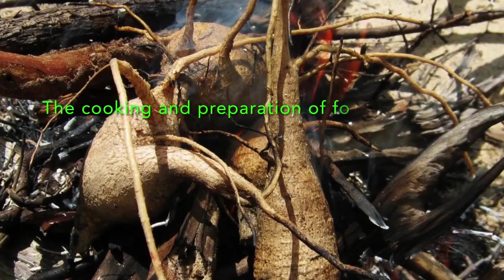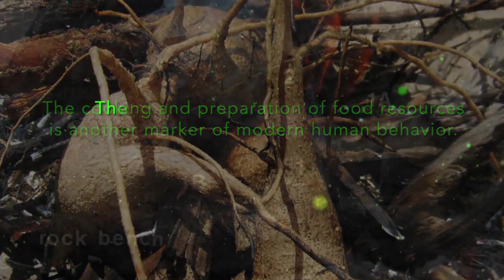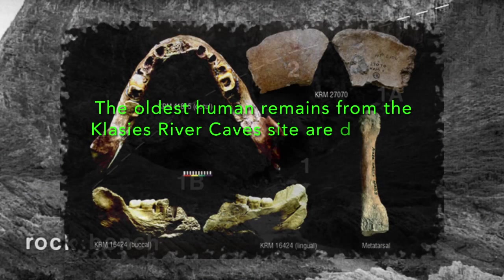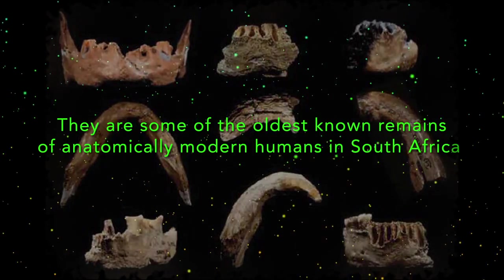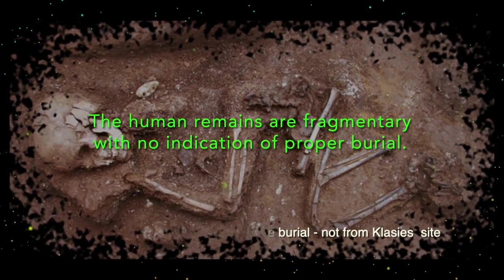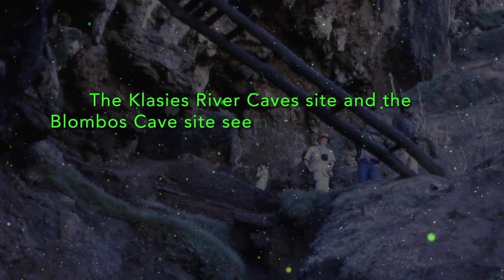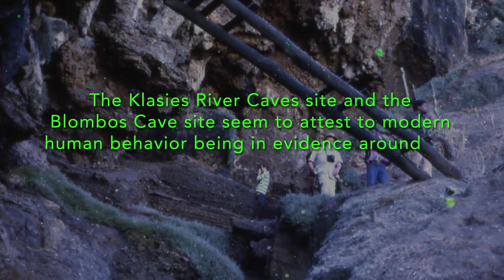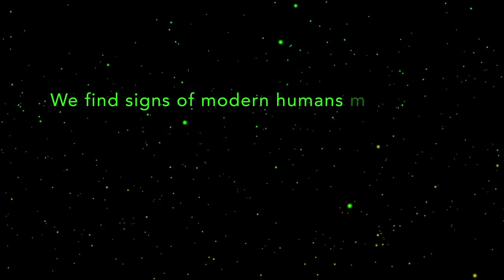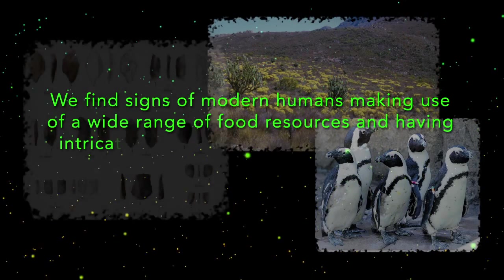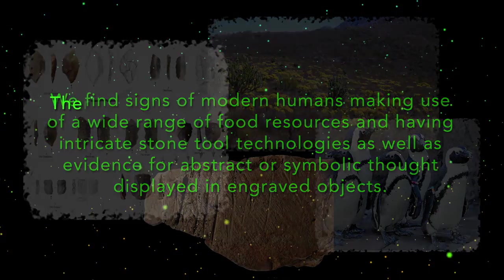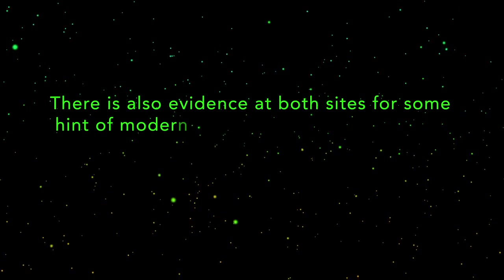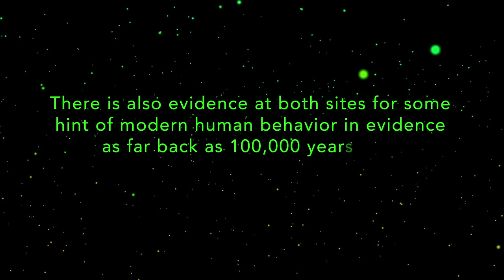The Klasies River Cave site and the Blombos Cave site seem to attest to modern human behavior being in evidence around the 70,000 year mark. We find signs of modern humans making use of a wide range of food resources and having intricate stone tool technologies, as well as evidence for abstract or symbolic thought displayed in engraved objects. There is also evidence at both sites for some hint of modern human behavior as far back as 100,000 years ago. Let's now turn to the Diepkloof Rock Shelter site near the west coast of South Africa.